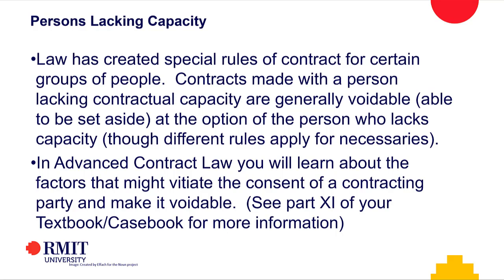As a blanket rule, children — the technical word used is either 'infants,' the old fashioned term, or 'minors.' Technically, an infant in this context is anyone under the age of majority. In Australia, that is 18. Take care with American citations, because infancy in American states can differ — you might be an infant for buying alcohol until 21, but have achieved majority for driving as young as 15. In Australia, it's pretty much 18.